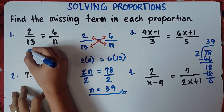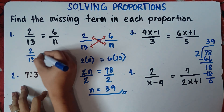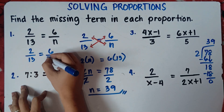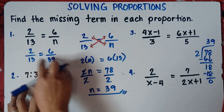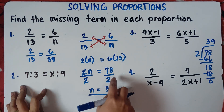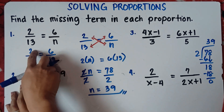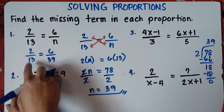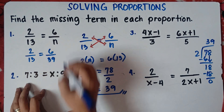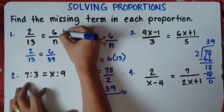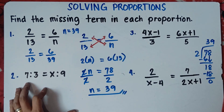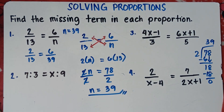So we can write: 2 over 13 is equal to 6 over 39. If you multiply cross: 39 times 2 is 78, and 13 times 6 is 78. That's the value of n — n equals 39. That's the answer for number one.